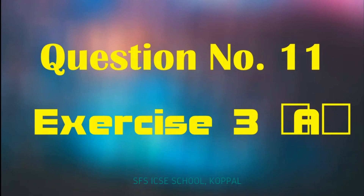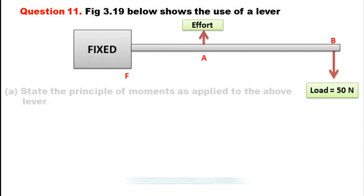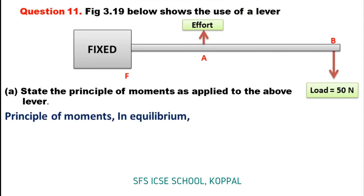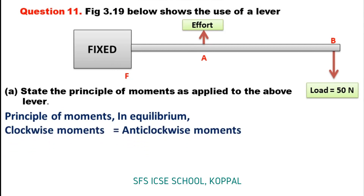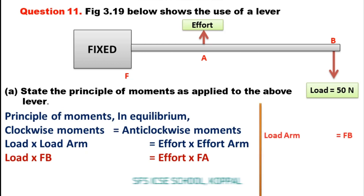Now let us do Question 11 of Exercise 3a. The figure below shows the use of a lever. Part A: State the principle of moments as applied to the lever. According to the principle of moments, in equilibrium, clockwise moment equals anti-clockwise moment. So load into load arm equals effort into effort arm, which is load into FB equals effort into FA. The fixed point is the fulcrum, so load arm is FB and effort arm is FA.